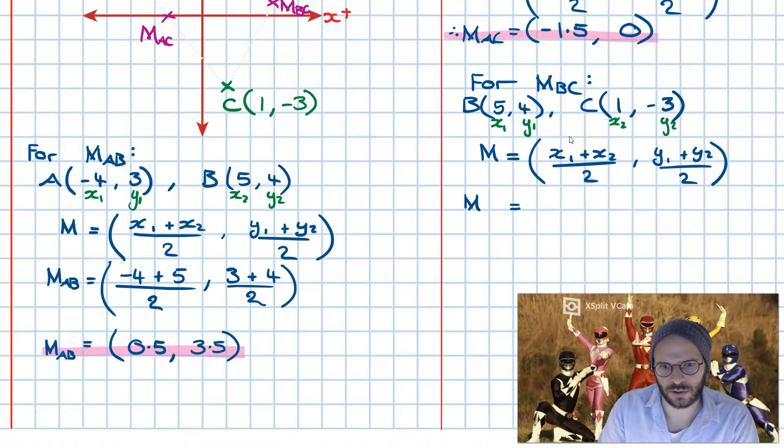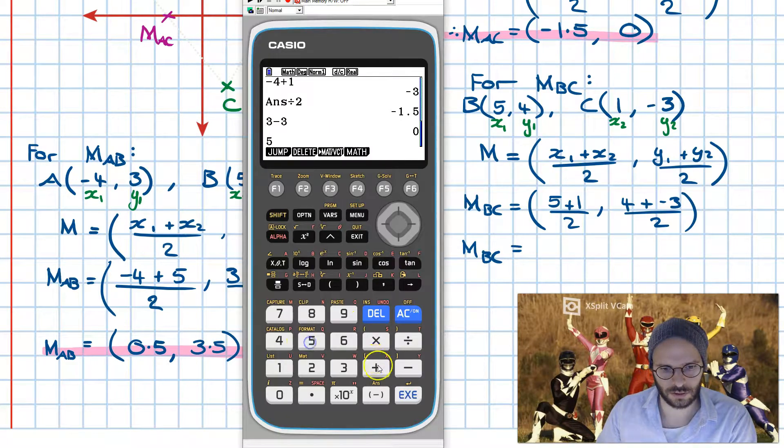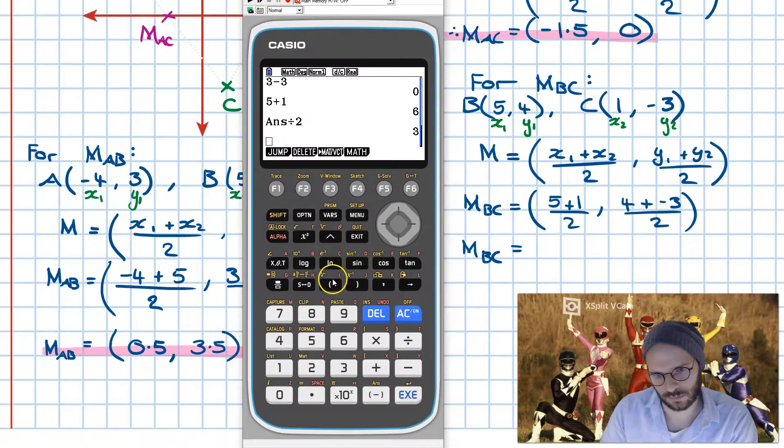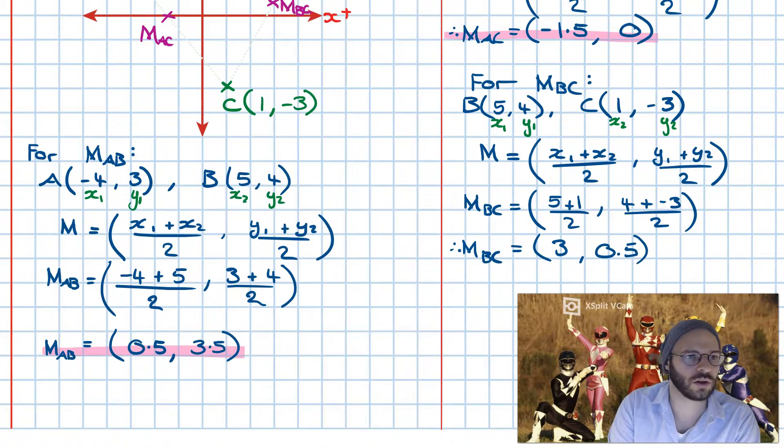It's simply going to be midpoint of BC. Bring up the calculator. 5 plus 1 divided by 2 is 3. Then 4 plus minus 3 gives us 1, divided by 2, and that's 0.5. Thus the midpoint for line BC is simply equal to 3 and 0.5.